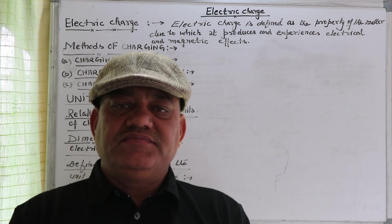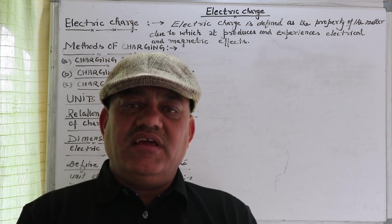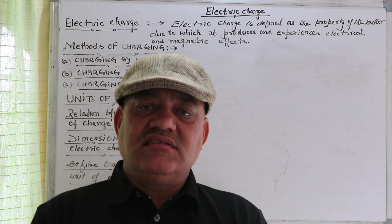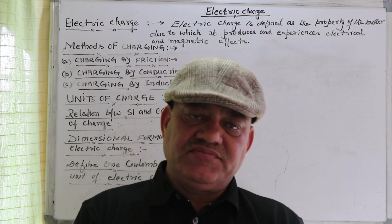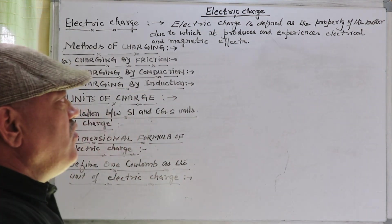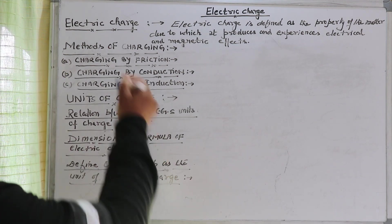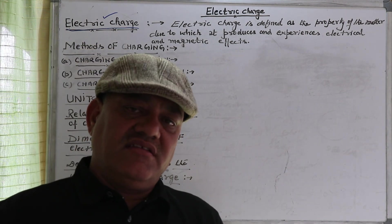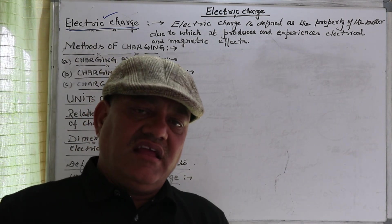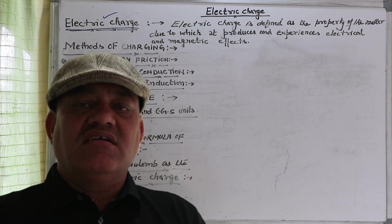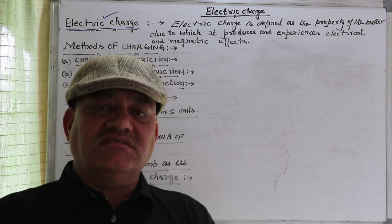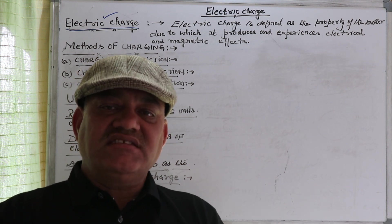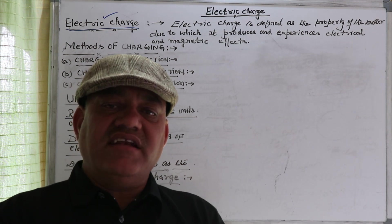Hello students, today we will discuss our next article that is electric charge. Electric charge is defined as the property of matter due to which it produces and experiences electrical and magnetic effects.